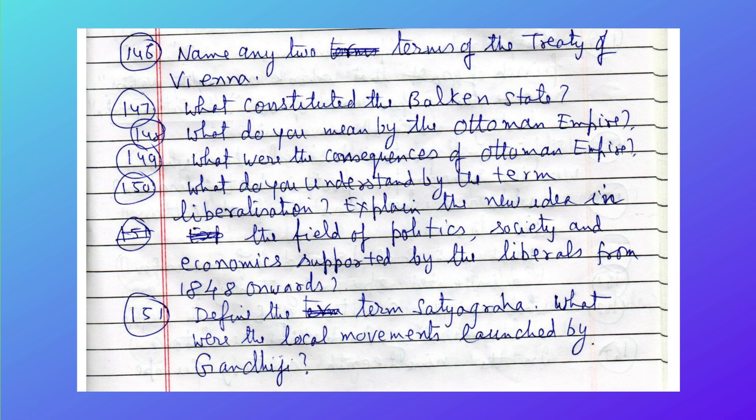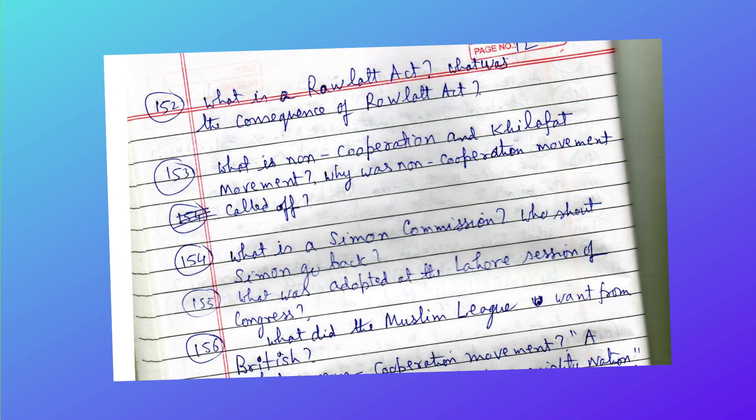Define the term Satyagraha. What were the local movements launched by Gandhi? What is the Rowlatt Act? What were the consequences of the Rowlatt Act? What is the Non-Cooperation and Khilafat Movement? Why was the Non-Cooperation Movement called off?